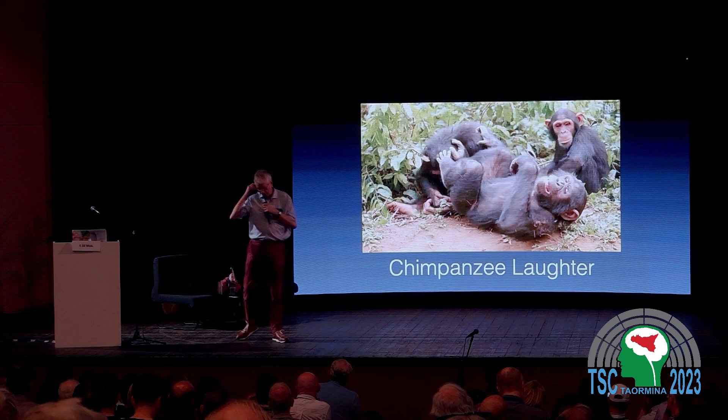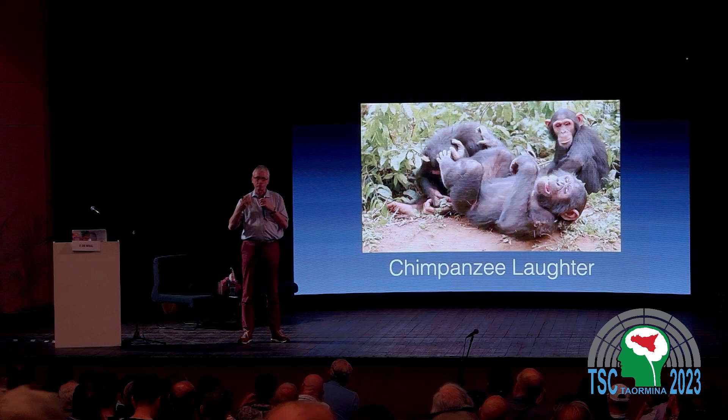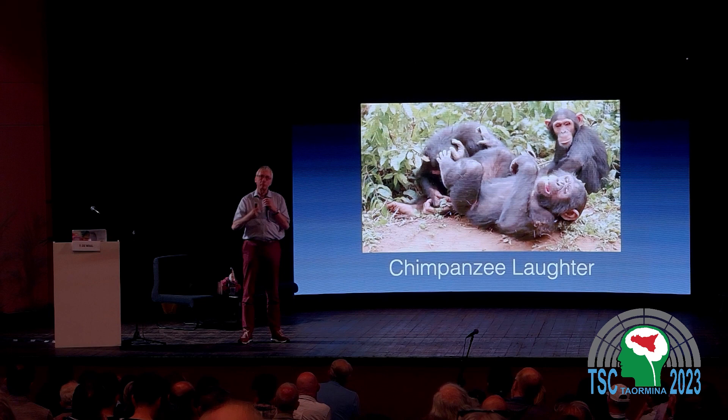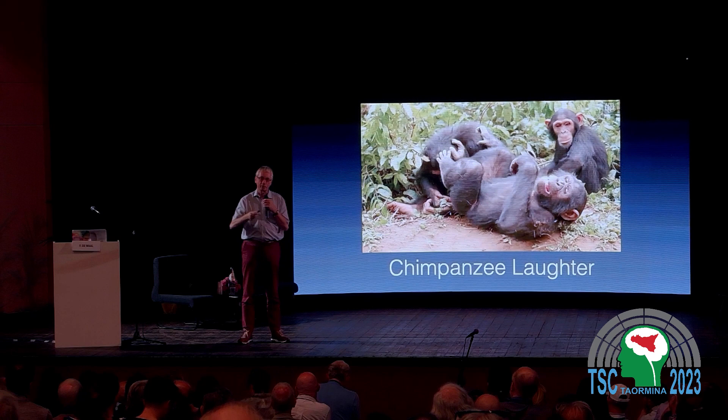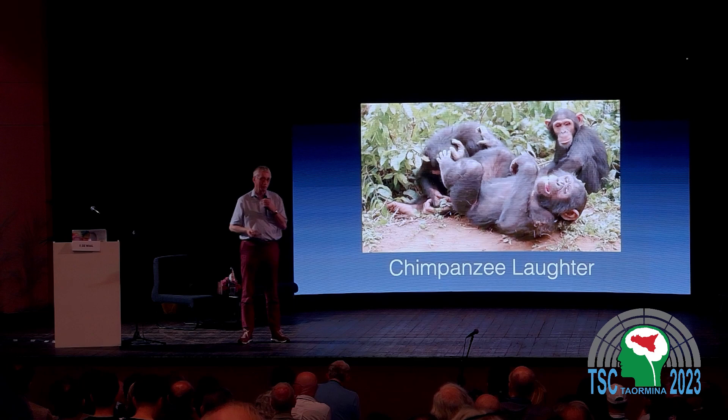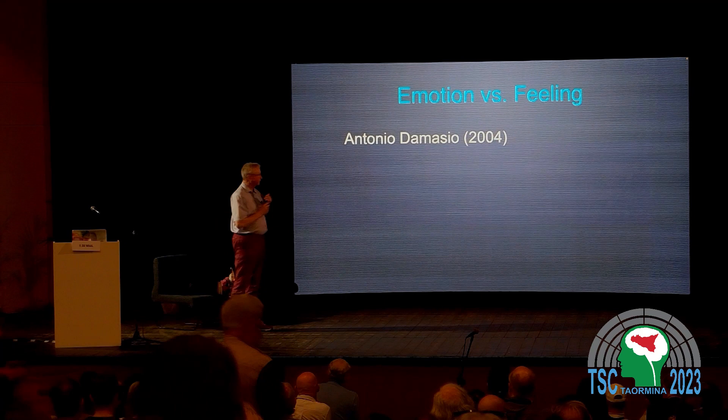The chimpanzee and bonobo — our two closest relatives — have been used as a wedge to get at the issue of animal cognition, because we accept certain cognitive traits in the chimpanzee much more easily than in a fish or a rat. The chimpanzee has been at the forefront of breaking open the whole issue of animal cognition. Now we live in a time where we study animal cognition in all sorts of species.